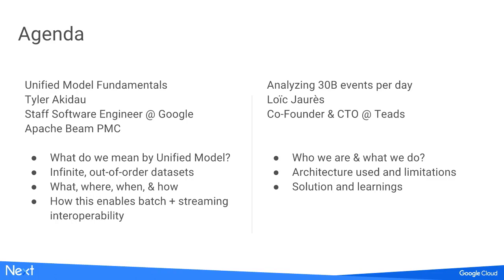There's going to be four main sections. First, I'm going to define what we mean by unified model. After that, I'm going to go into the infinite out-of-order data sets that really underlie the whole reason that we need this unified model. I'm going to spend time talking about the what, where, when, and how model, and then summarize how all this enables batch and streaming interoperability before handing off to Loic.